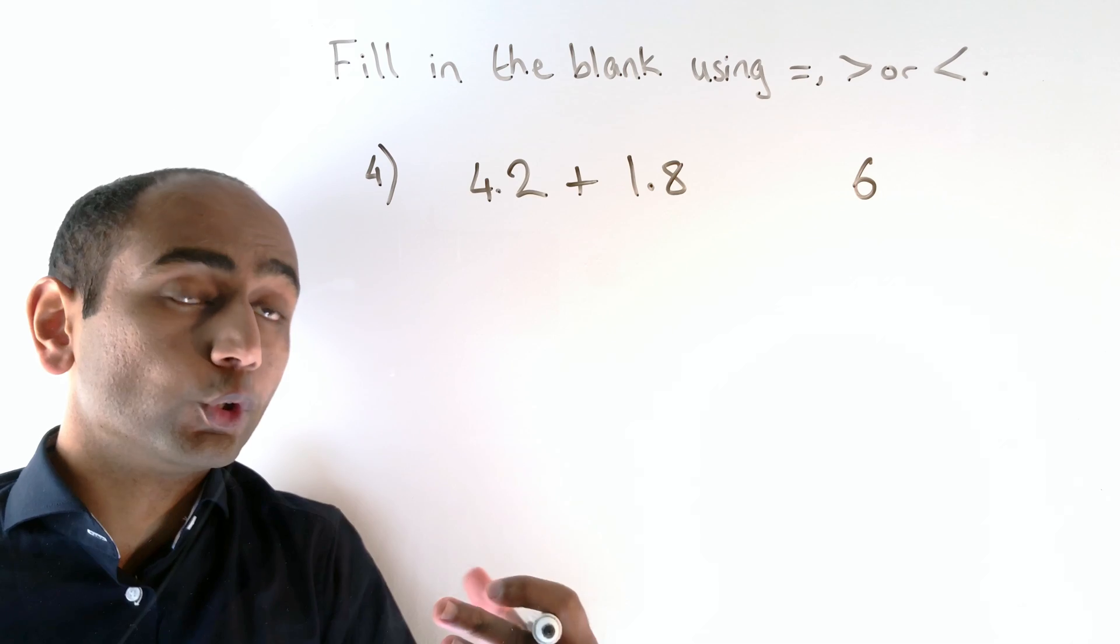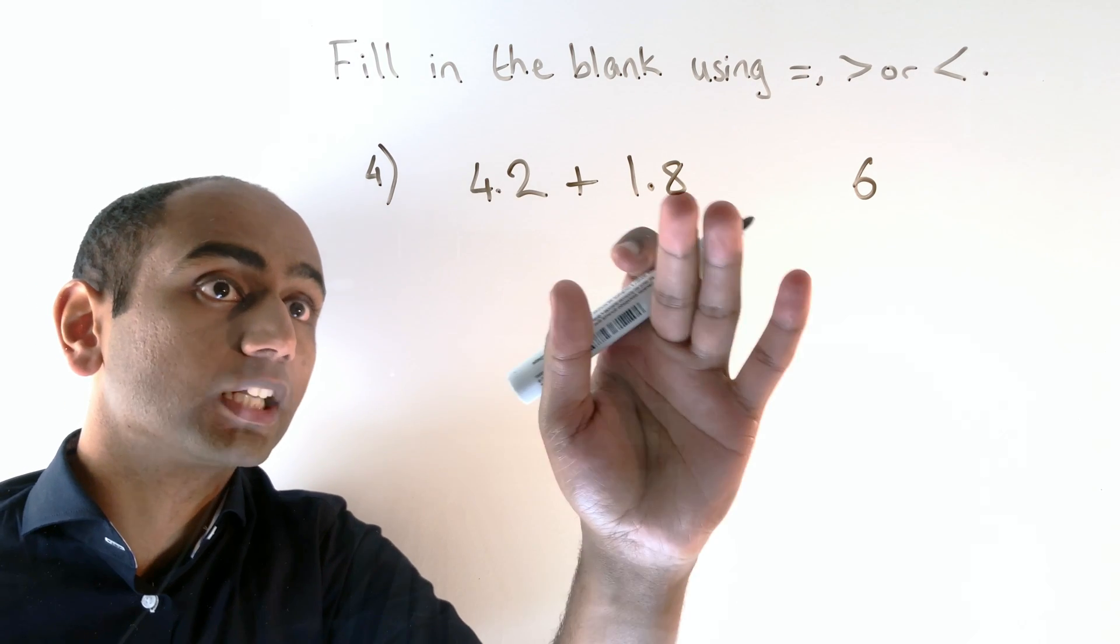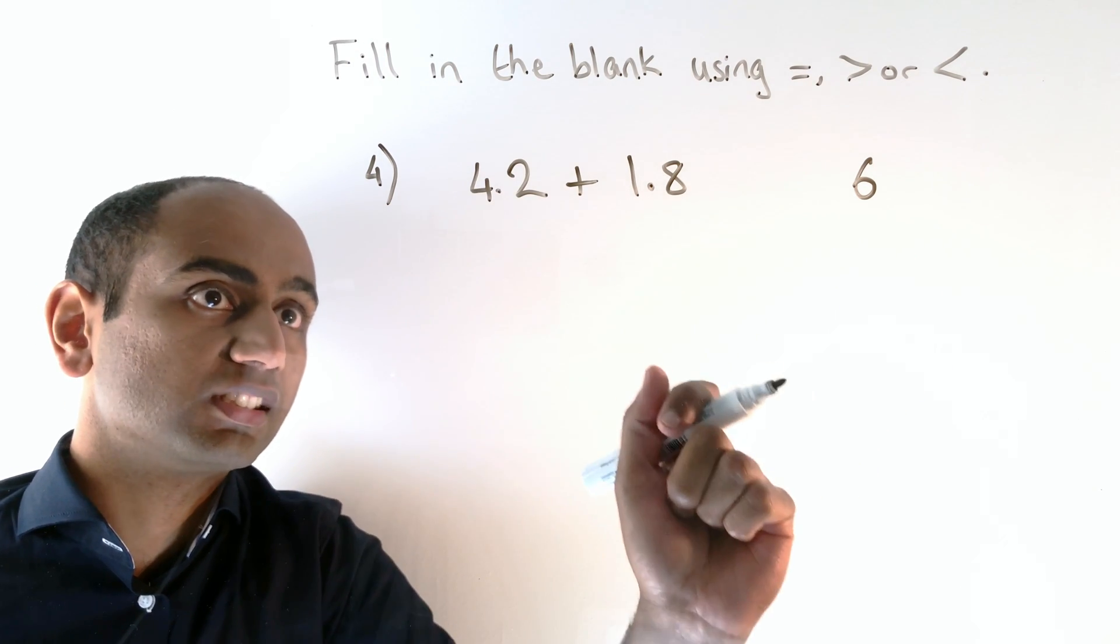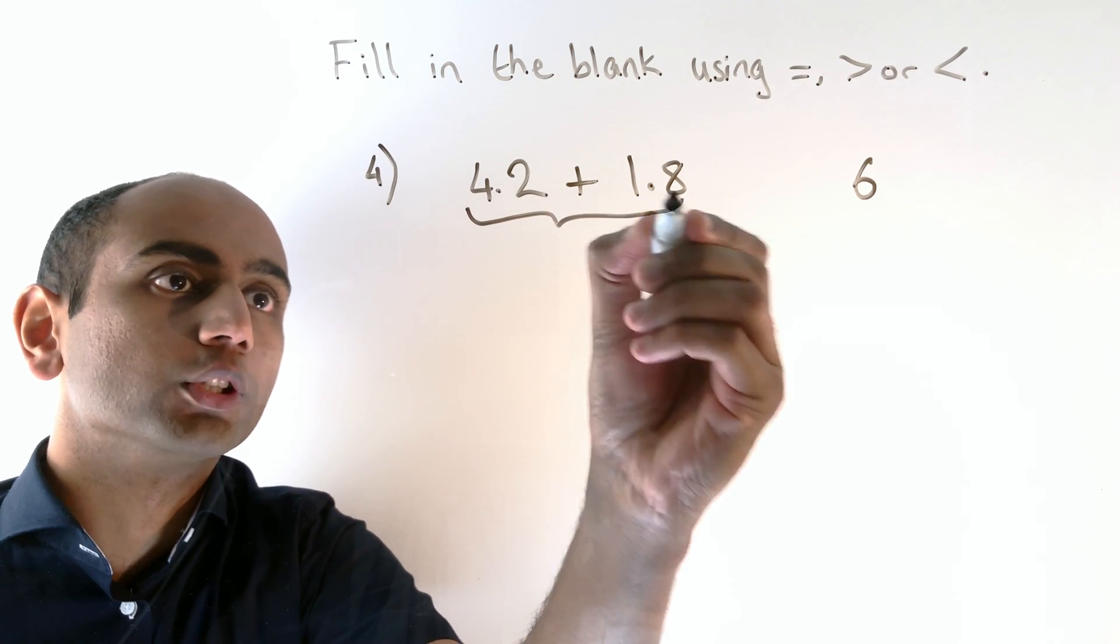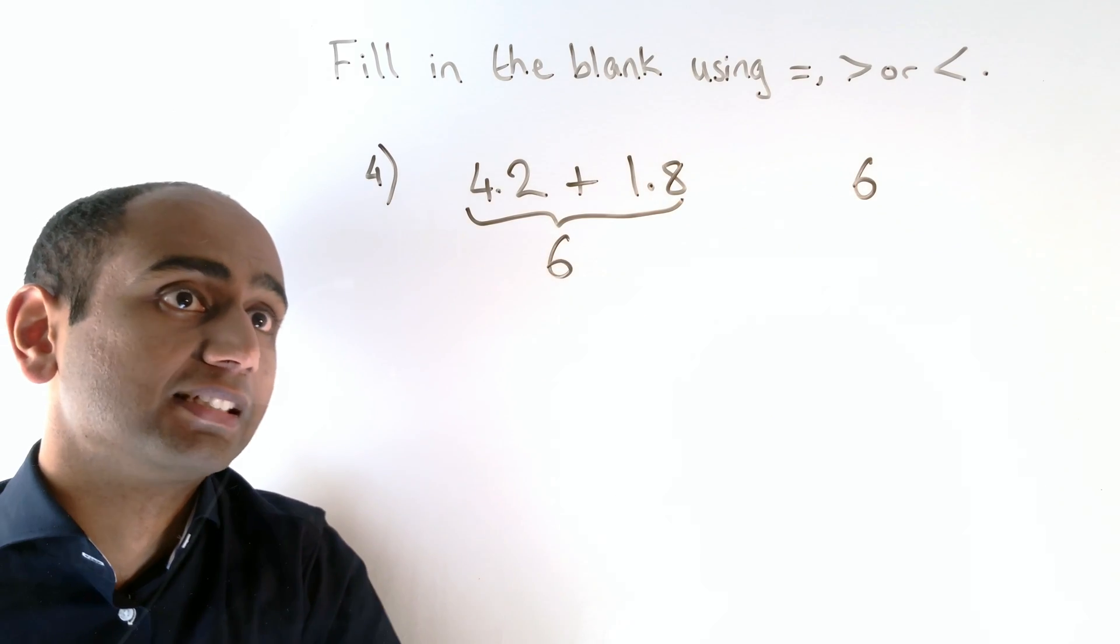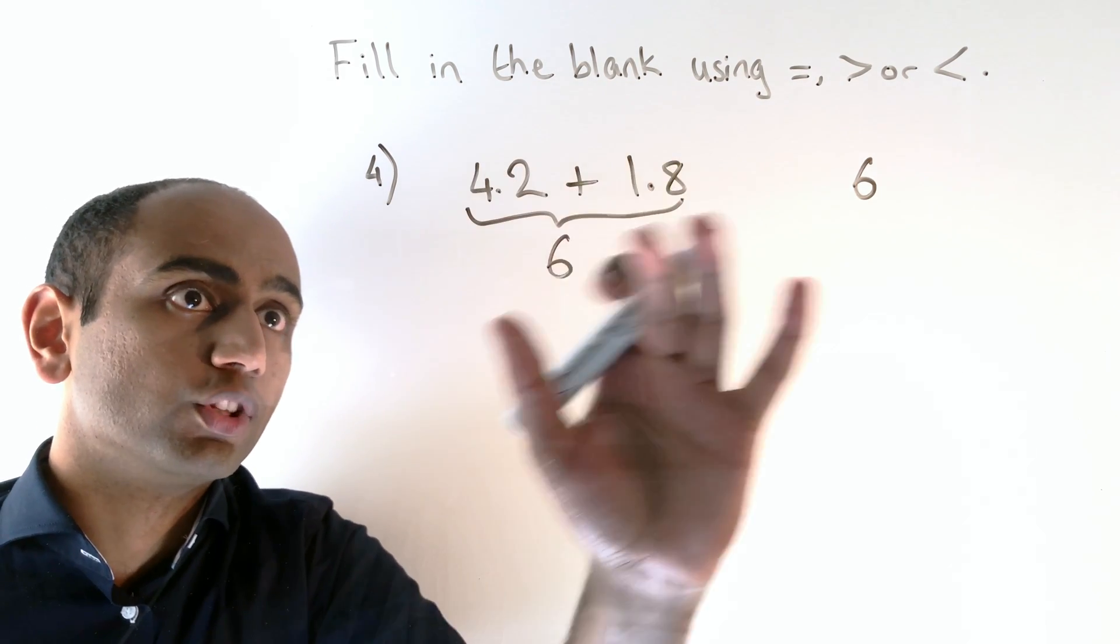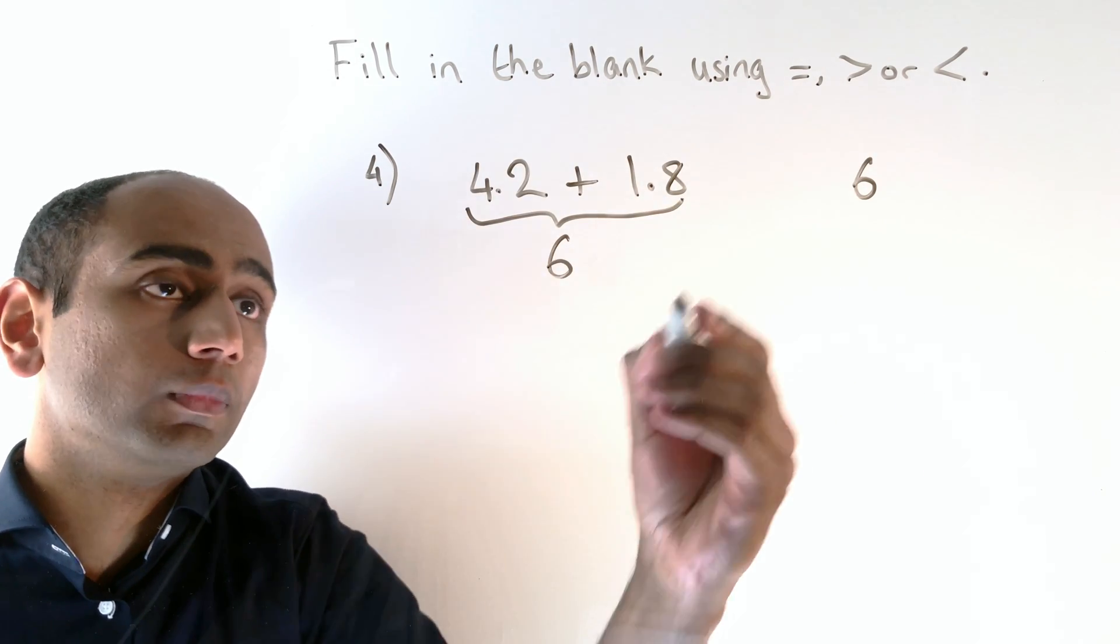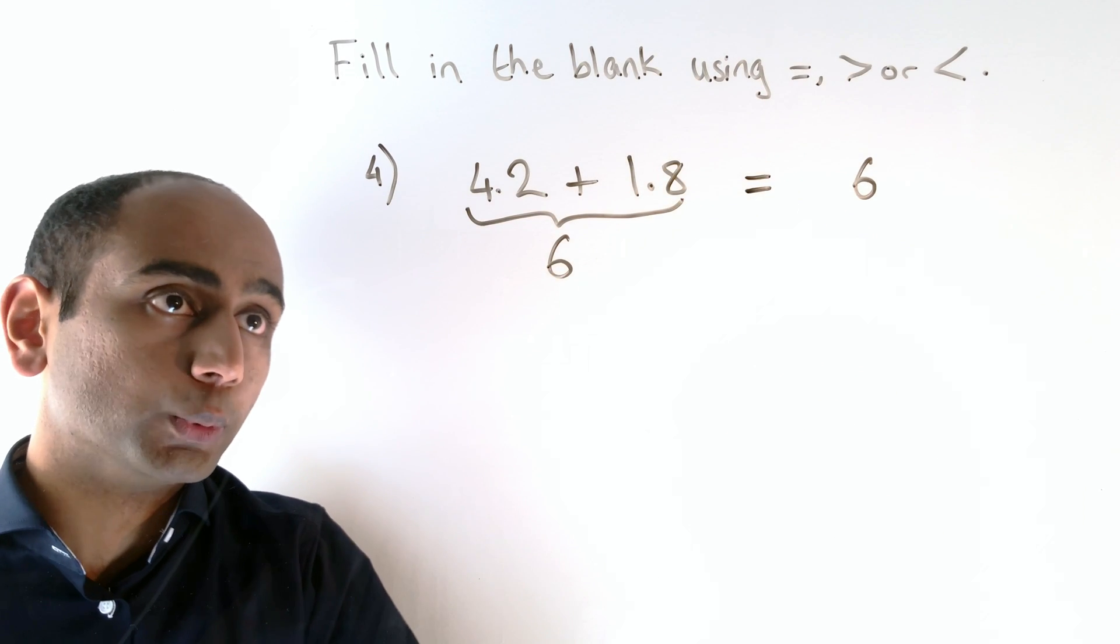In question four, we're comparing 4.2 plus 1.8 with 6. Now if we work out what 4.2 plus 1.8 is, we find that the answer is 6 exactly. So these are equal and we use the equal sign.